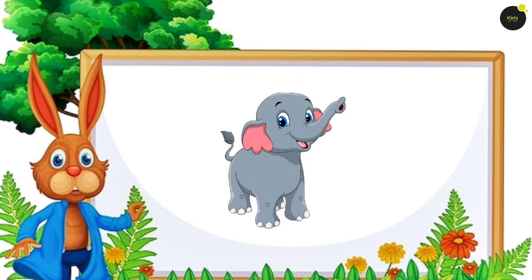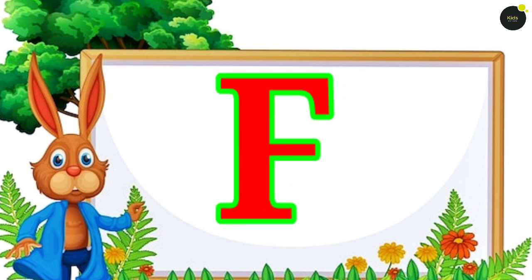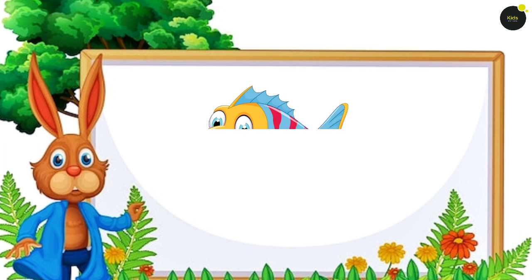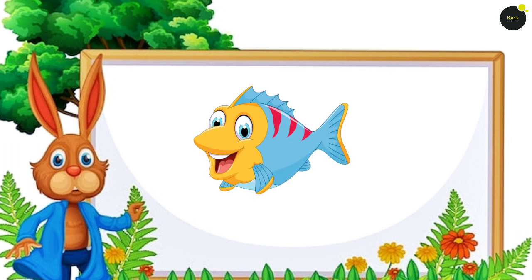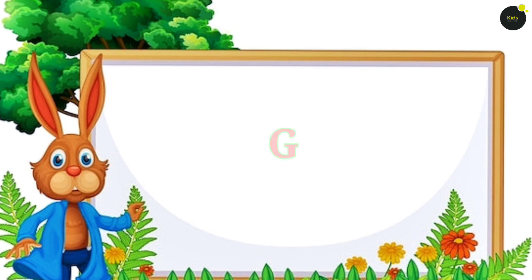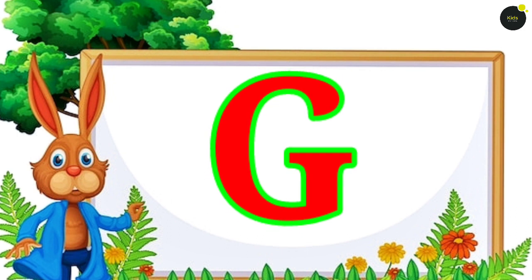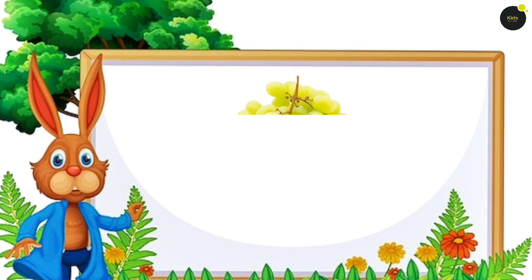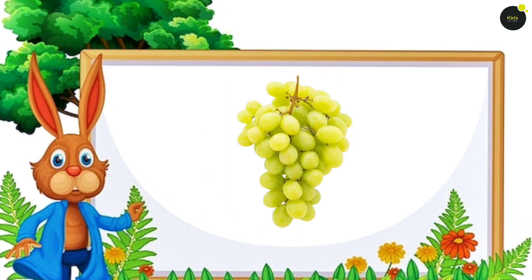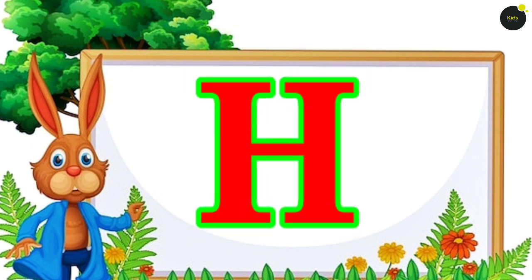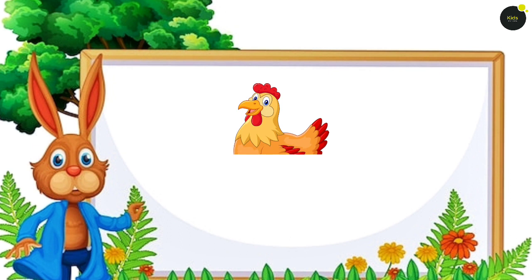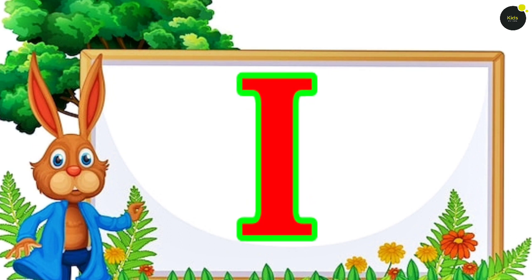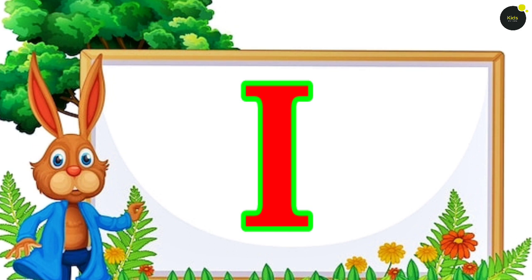E for Elephant. Elephant means Hearty Heartfish. F for Peace. Peace means Machini. D for Graves. Graves means Angoors. H for Hen. Hen means Morgi. I for Ice Cream.